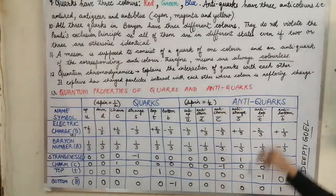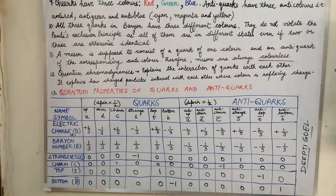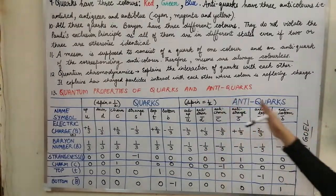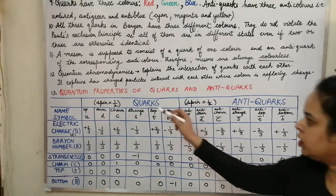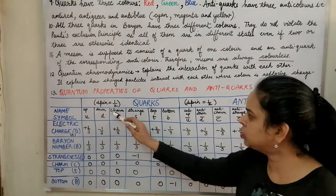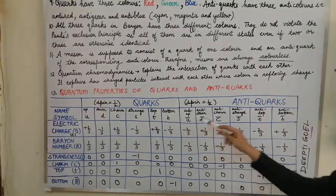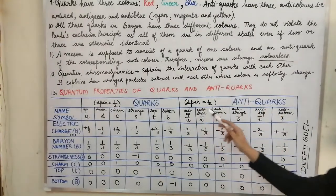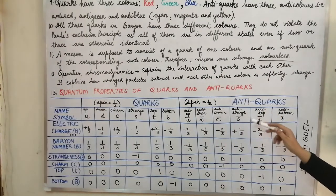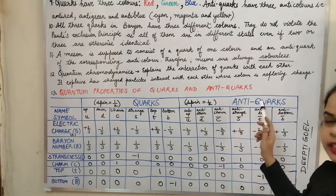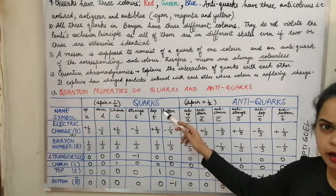Here are the quantum properties of the quarks and anti-quarks listed in two sections. The quarks include up, down, charm, strange, top, and bottom. The anti-quarks are anti-up, anti-down, anti-charm, anti-strange, anti-top, and anti-bottom. Both quarks and anti-quarks possess spin 1/2.